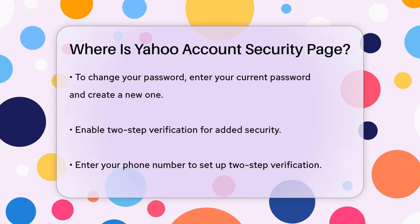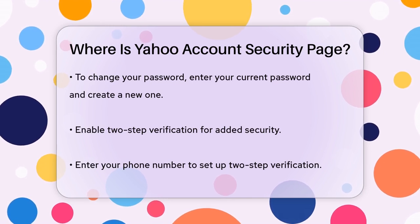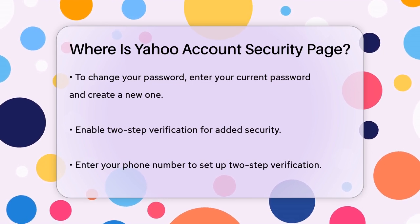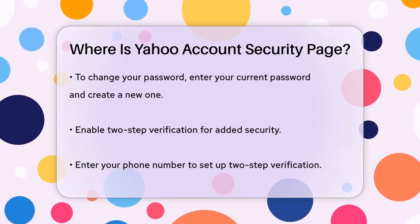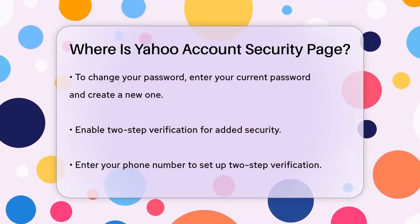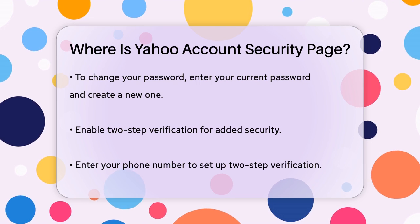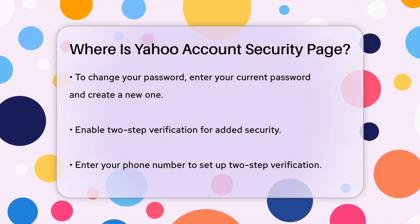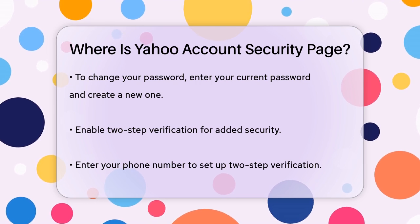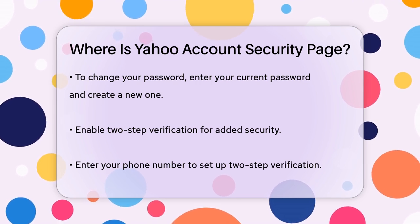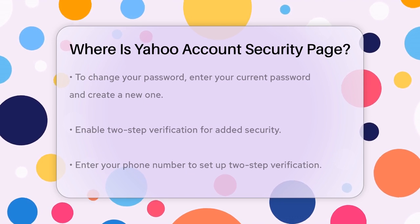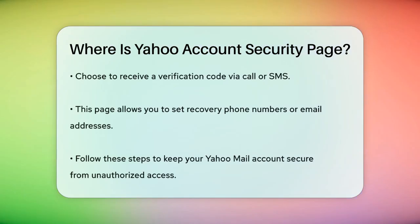For example, if you want to change your password, you'll need to type in your current password, then create and confirm a new one. If you're setting up two-step verification, you'll need to enter your phone number and choose whether you want to receive a verification code via a call or SMS.